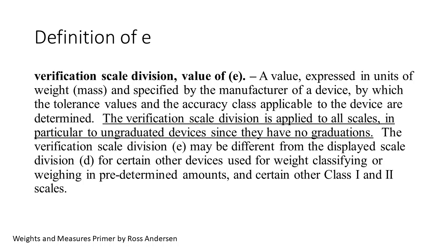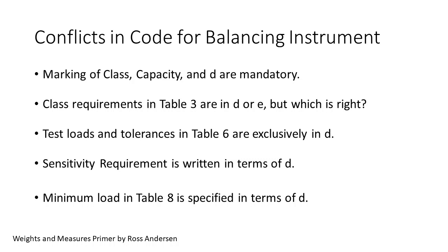We immediately find conflicts. The code makes marking of class, capacity, and D mandatory. There are no exceptions. We find confusion in Table 3 since Column 2 is labeled in D or E, and I contend the code never explains how to decide which to use. The tolerance in Table 6 are expressed in Scale Divisions D. The sensitivity requirement is specified in Scale Divisions D. Finally, the minimum loads in Table 8 are specified in Ds. How do we apply any requirement in Ds to an instrument with no Ds?